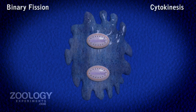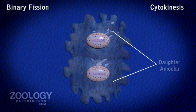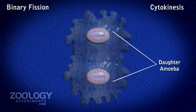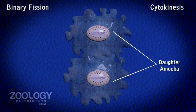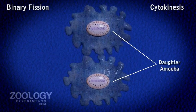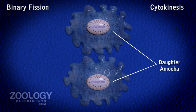Cytokinesis is followed by karyokinesis. Amoeba stretches and the cytoplasm is divided, completing the process of binary fission.